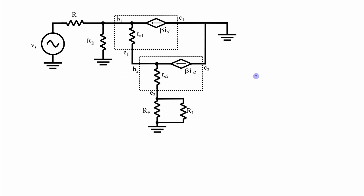Here is the circuit redrawn without the outer box, to hopefully make it a little bit clearer what's going on. Basically what I want to do is look at what happens when you have these two transistors back to back in this small signal model, and ultimately what we want to figure out is: what is the input impedance, what is the output impedance, and what is the voltage gain.